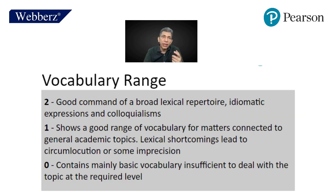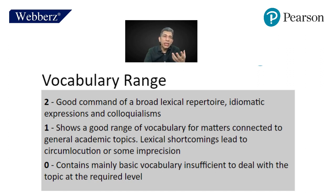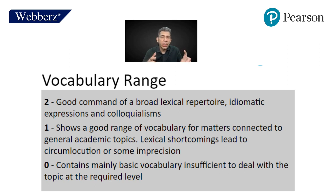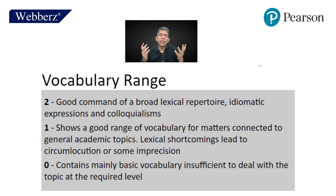For vocabulary range, you get two for using regular relevant words, good idiomatic language, and good colloquialisms. You get one if the academic topics are present but the vocabulary is not very strong. You get zero if the vocabulary is insufficient, or if you are trying to say something but end up saying something else entirely.